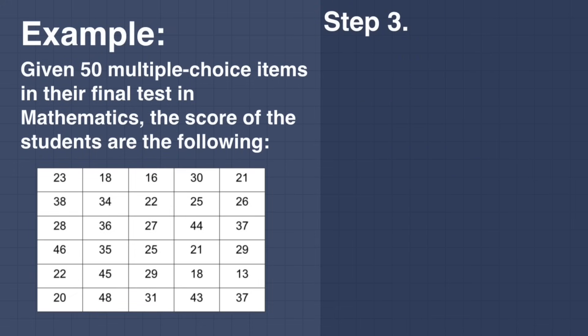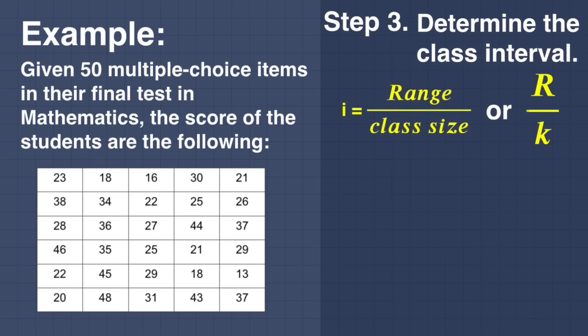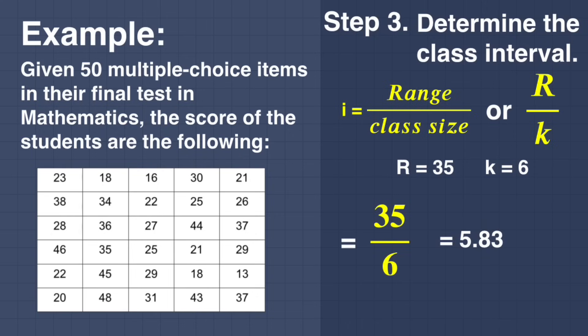Step number 3: Determine the class interval. The formula is I equals range divided by class size, or R divided by K. Since R is equal to 35 and K is equal to 6, we substitute: 35 divided by 6 equals 5.83 — round up, that is approximately 6.